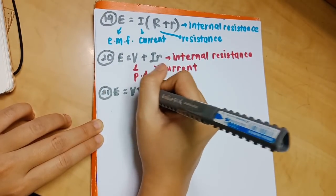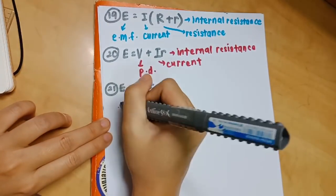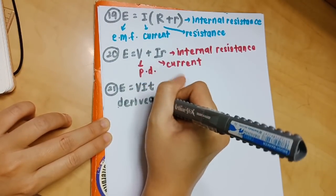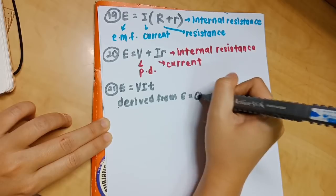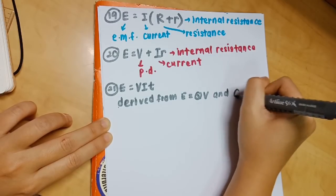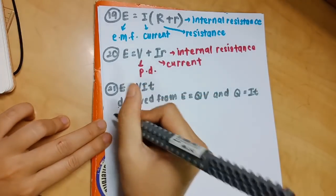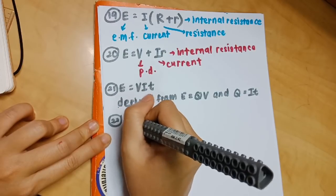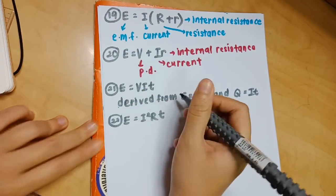Number 21: E equals VIT. This is actually derived from E equals VQ and Q equals IT. When you substitute Q equals IT into E equals VQ, you should be able to get this formula, which is E equals VIT.